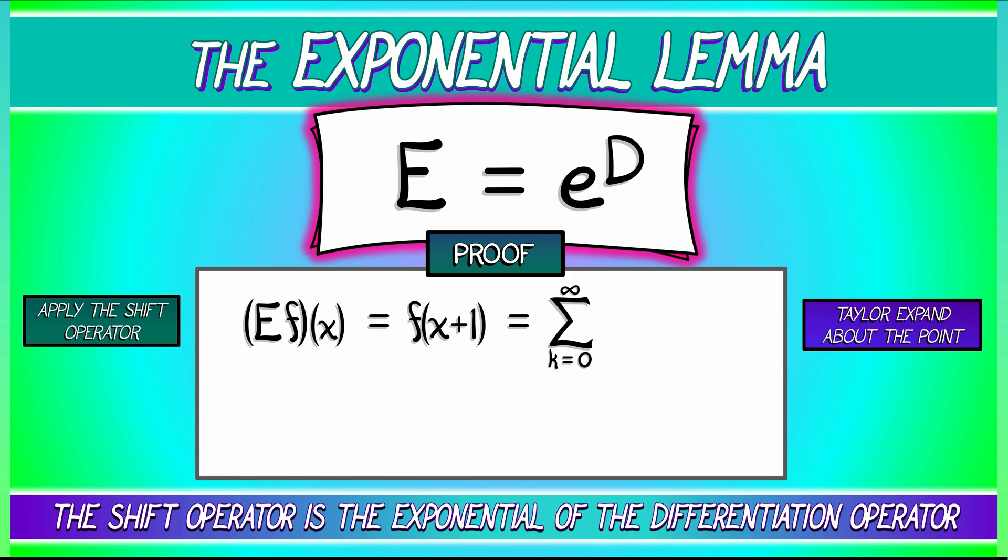Which we can write using the differentiation operator capital D. Evaluate that derivative at x, and then, because we've shifted over by one, we're using that Taylor expansion formula where h is equal to one, so we have h to the k, which is really one to the k. Okay, great. That's what the shift operator is really doing.